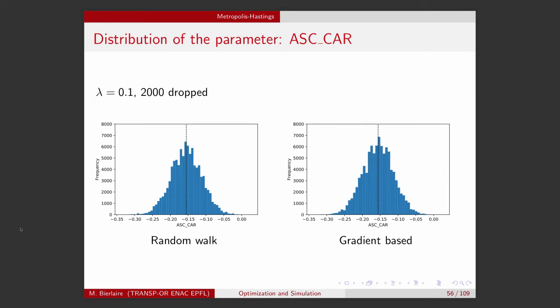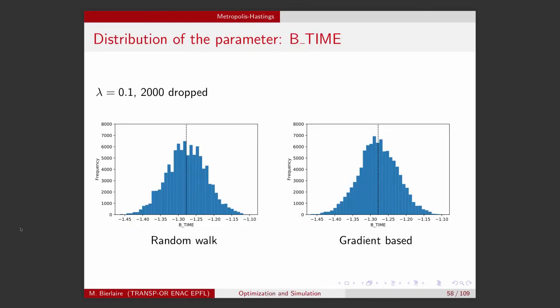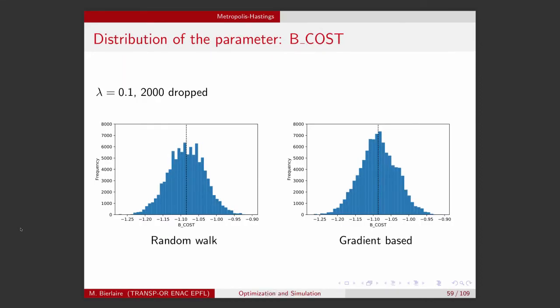I have also compared the draws from the random walk and the gradient-based Markov chains for each parameter. So this is for the intercept for car. This is for the intercept for train. And this is for the time coefficient and the cost coefficient.